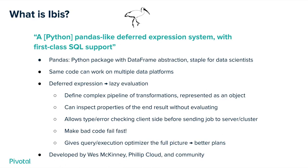This way it can help your bad code fail fast. There's nothing worse than sending a query and having it run for an hour before the system figures out there's some problem. Also, it gives the query execution optimizer the full picture, because otherwise with big data processing pipelines you might build up pieces of the pipeline as separate queries and write them to intermediate tables. This way it gives the optimizer the full plan and full information to make a better plan. Lastly, IBIS was developed by Wes McKinney and others who were instrumental in creating the pandas package — created by the same people who know how to write abstractions that data scientists like.